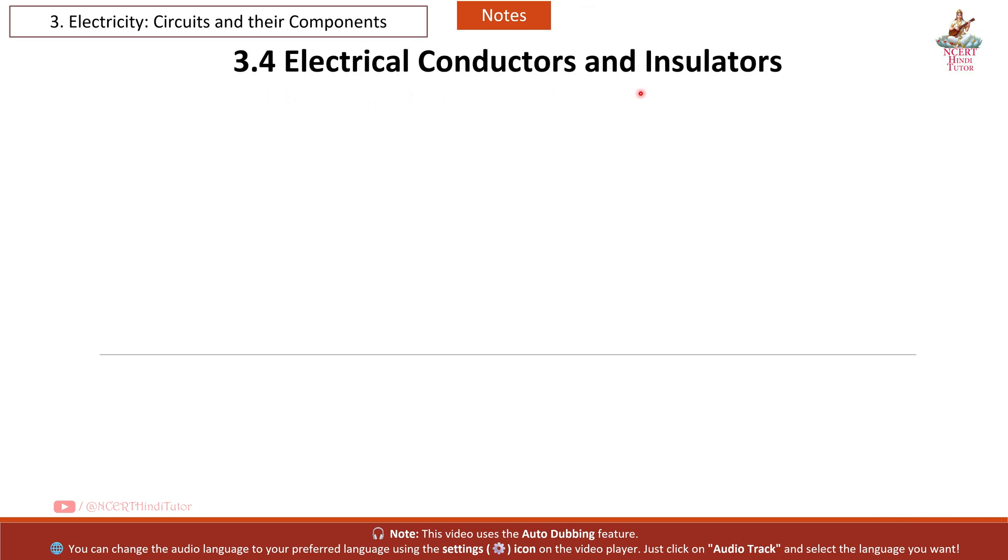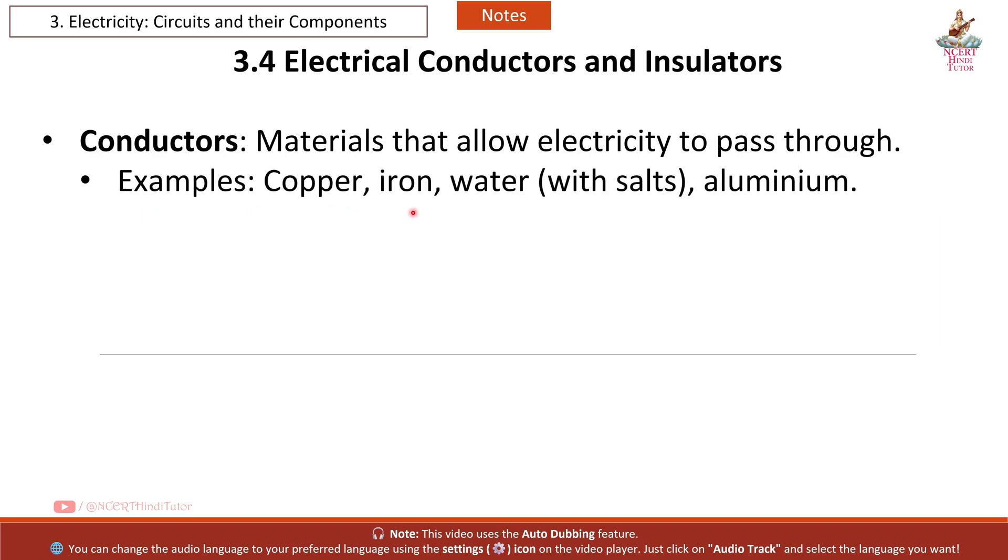3.4 Electrical Conductors and Insulators. Conductors: materials that allow electricity to pass through. Examples: copper, iron, water with salts, aluminum.